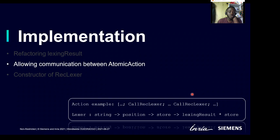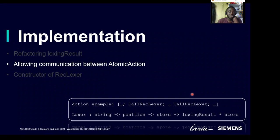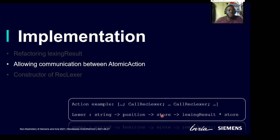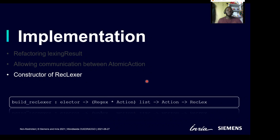We noticed it can be useful to keep a variable in which we can store anything we want during lexical analysis. So we changed the definition of lexers and added a parameter, a typed store. This type is parametric and defined by the user. Finally, we implemented a constructor of lexer that takes a selector, a list of regular expressions associated with actions, and an action for end-of-file or empty string processing, and returns a COCLEX.